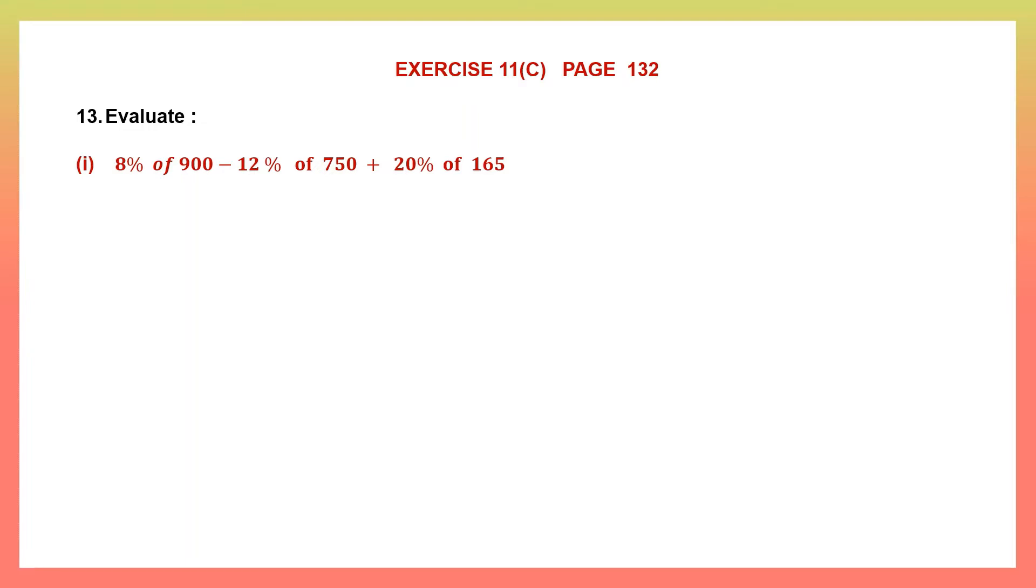First one: 8% of 900 minus 12% of 750 plus 20% of 165. Let's start working out each one. For convenience sake, I'm going to put brackets here and then start working each one.